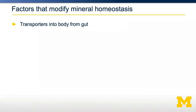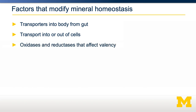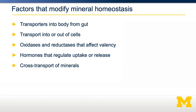There are several factors that can modify how an individual has a specific requirement for a mineral. The main factor is transport — both in and out of our gut and in and out of our cells — because minerals need to get into our bodies and then into specific cells at the right time. There are also various enzymes called oxidases and reductases that can affect the valency of an ion, for example iron 2+ to iron 3+. A variety of hormones can regulate the uptake, release, or excretion of pertinent minerals depending on their ability to sense nutrient levels. A fifth factor is the cross-transport of minerals: several minerals share transporters, so if you have too much of one mineral it may impair the ability to absorb or excrete another mineral.